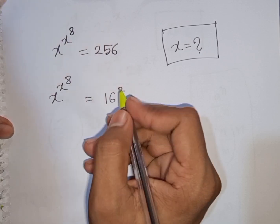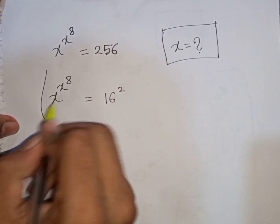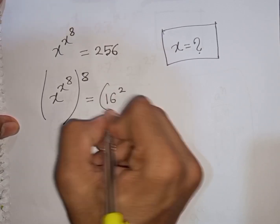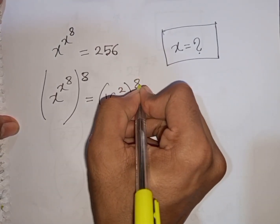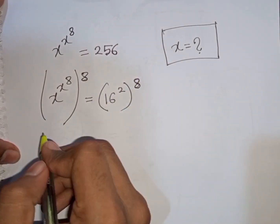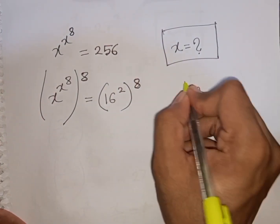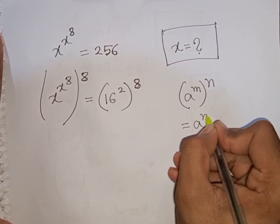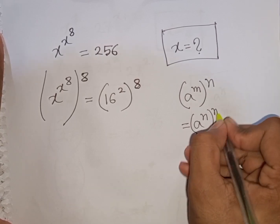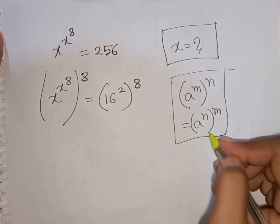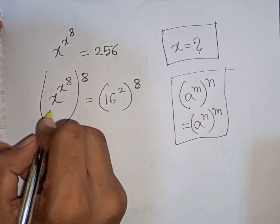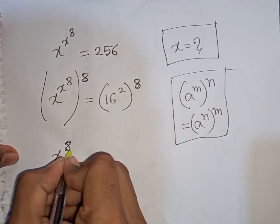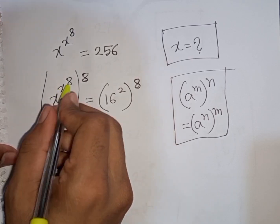Now we multiply both sides by the power of 8. You can apply the exponential rule that a power m, bracket power n, is equal to a power n, bracket power m. According to this rule, I can compare here.